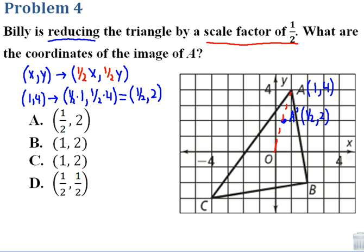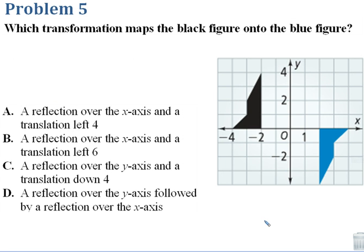And if I finish that triangle off with the B prime and C prime, we can check and make sure we're doing things right. Same triangle, just half the size. So the answer for this one would be A at 1 half, 2.